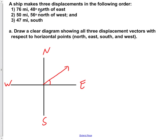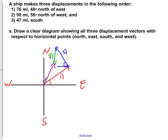We know this angle is to be 48 degrees. Our second vector, shown here in blue, if we're adding with the tail-to-tip method, makes an angle of 56 degrees north of west with respect to the horizontal axis. Finally, our third vector is 47 miles south, so that's directed straight down. Our resultant vector then connects the starting point of vector 1 to the final point of vector 3.